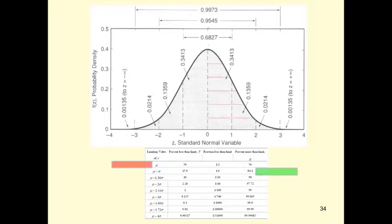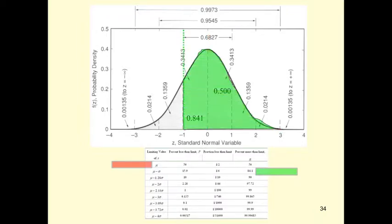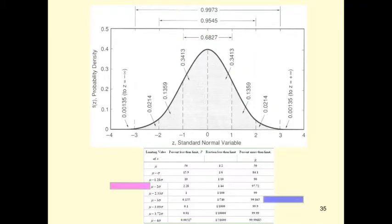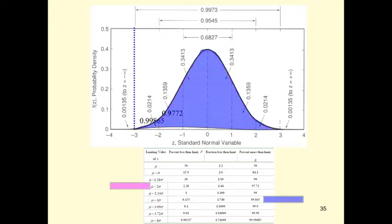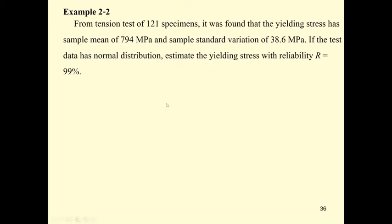Putting this into the diagram: this line is for the mean, this is for mean minus one standard deviation, this is mean minus two standard deviations, and this is mean minus three standard deviations. Most of the data above each value will pass. That concludes our second chapter.